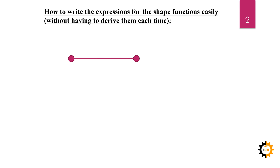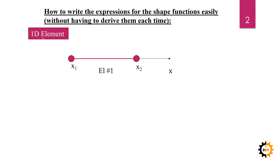Here you can see a straight line element with dots — these dots are the nodes. These nodes are at coordinates x1 and x2, where this line is represented along one coordinate system, the x-axis. This is a single element following a straight line in one dimension, so we call it a 1D element.